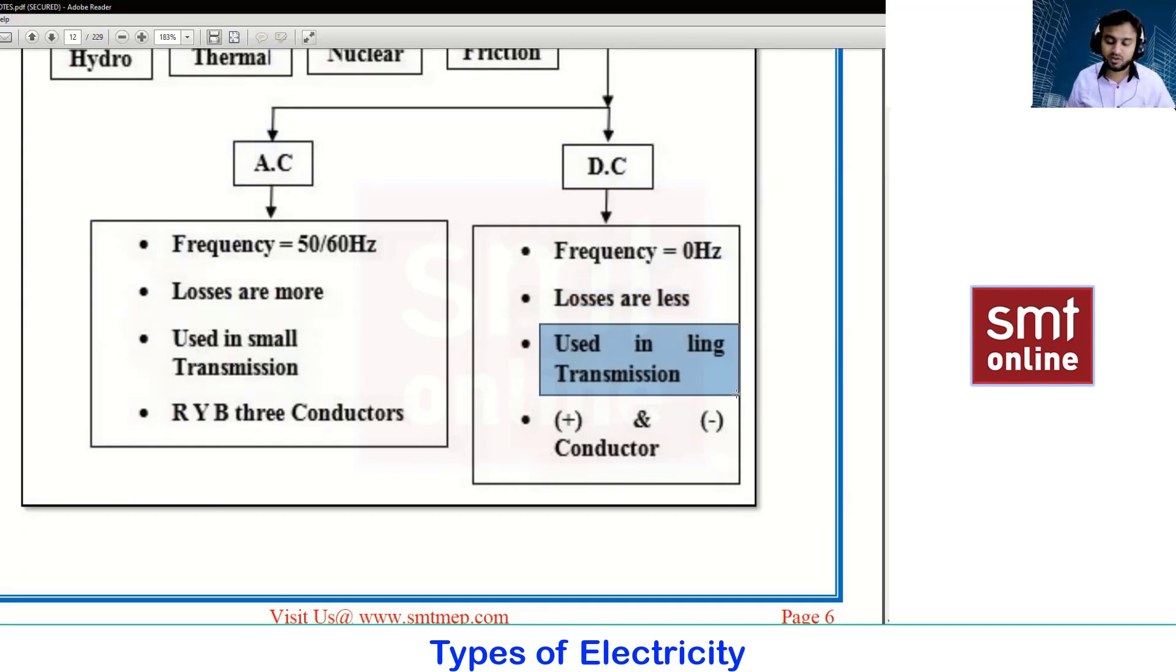Sometimes when we transmit supply from one point to another, like from one state to another state or one city to another city, if the span is more than 300 kilometers, we go with the direct current line. Here we have only two conductors - positive and negative conductor. We are saving the cost of a conductor also.